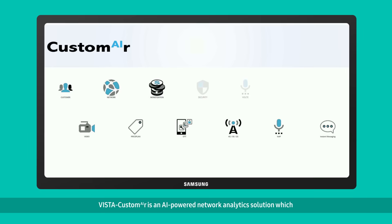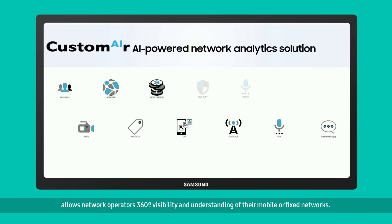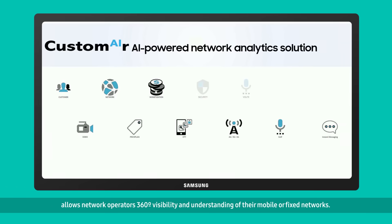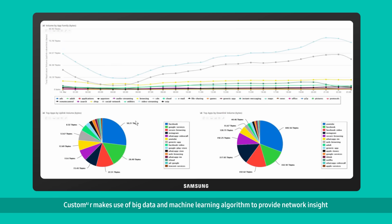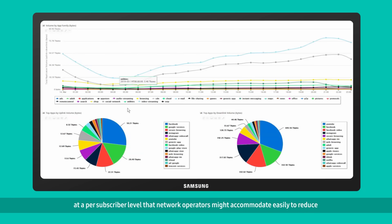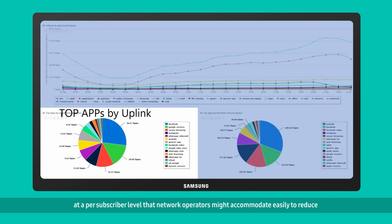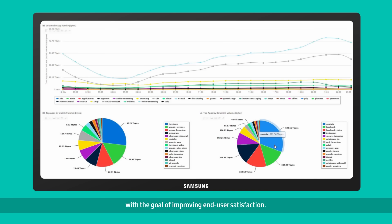Vista Custom Air is an AI-powered network analytics solution which allows network operators 360-degree visibility and understanding of their mobile or fixed networks. Custom Air makes use of big data and machine learning algorithms to provide network insight at a per-subscriber level, allowing operators to reduce network fault rectification, resolution time, and operational costs with the goal of improving end-user satisfaction.